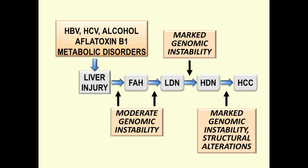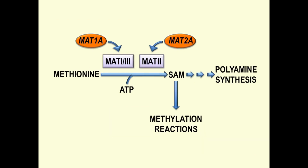A body of evidence indicates that a mixture of genetic and epigenetic changes are involved in hepatocarcinogenesis. Epigenetic changes include the deregulation of methionine metabolism, leading to a sharp decrease in HCC methionine synthesis.